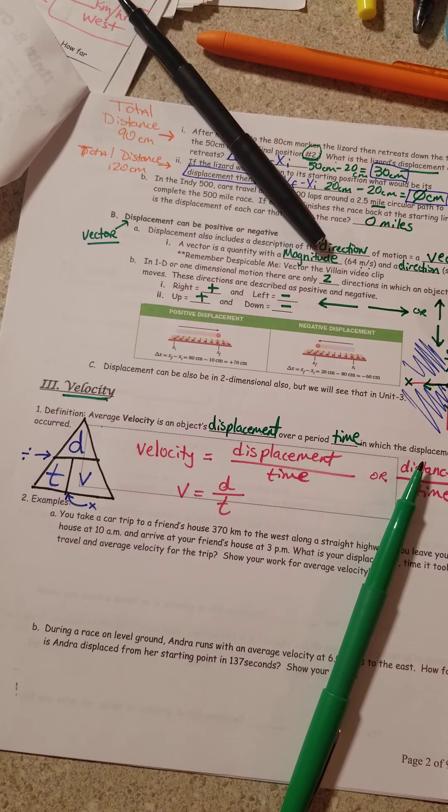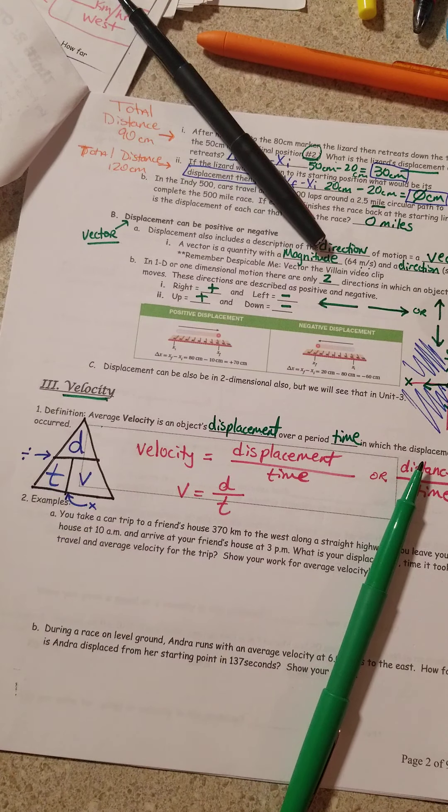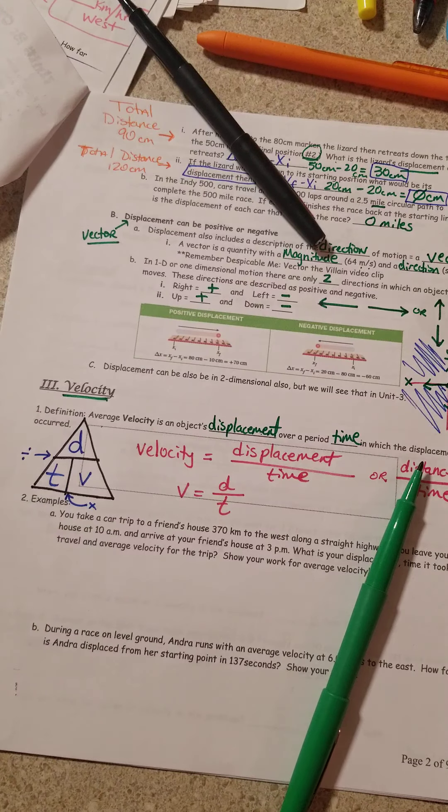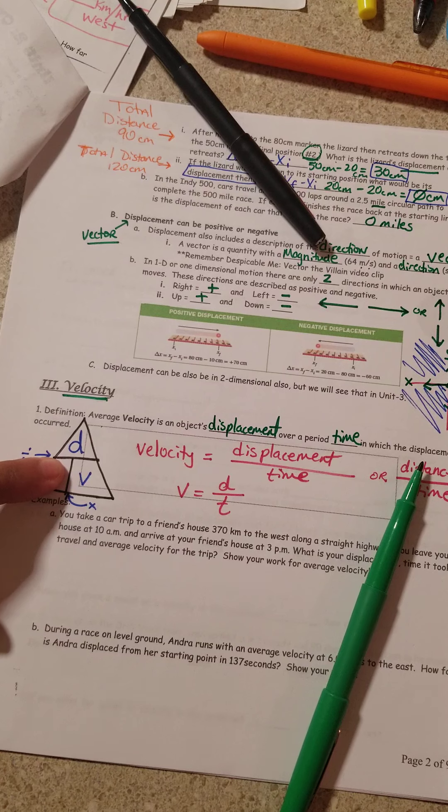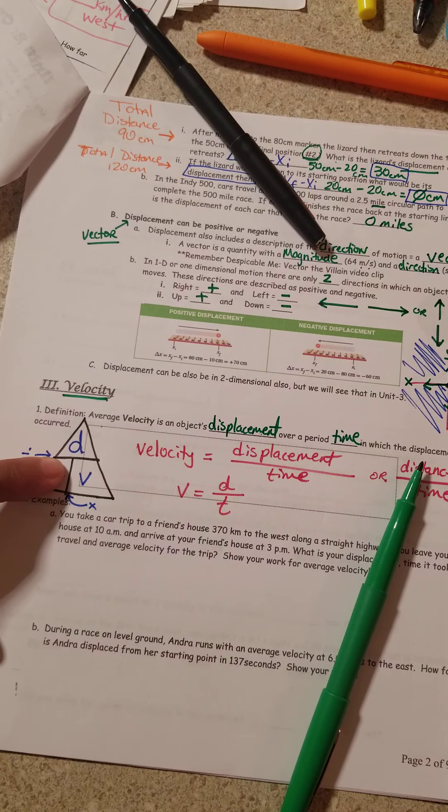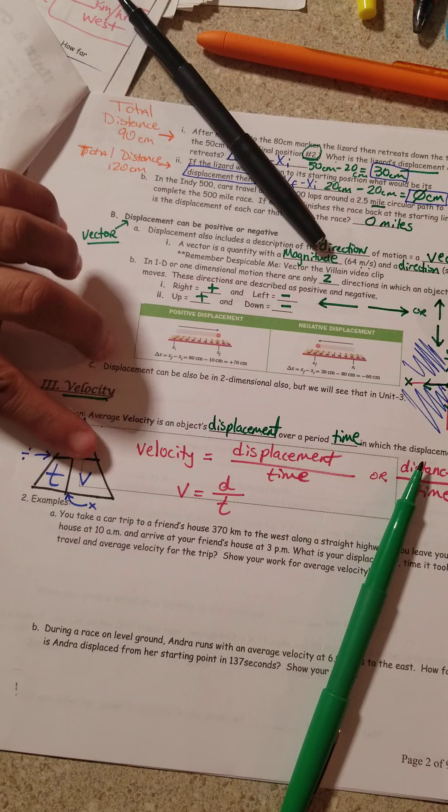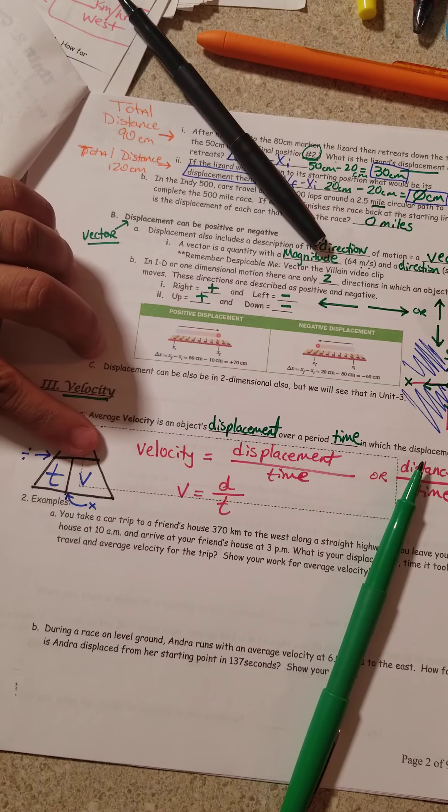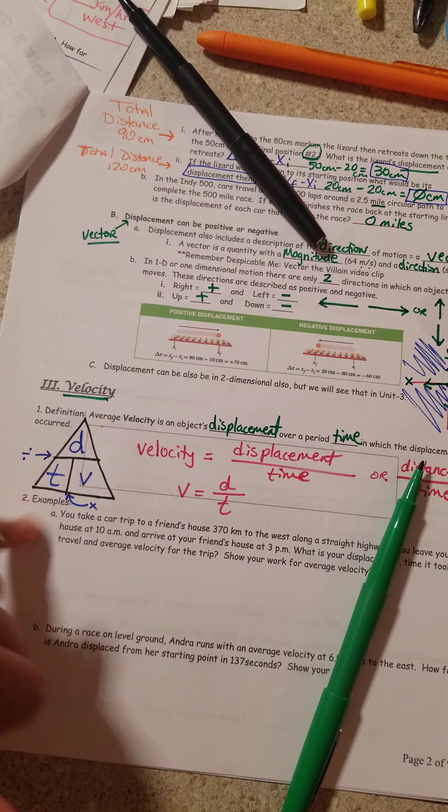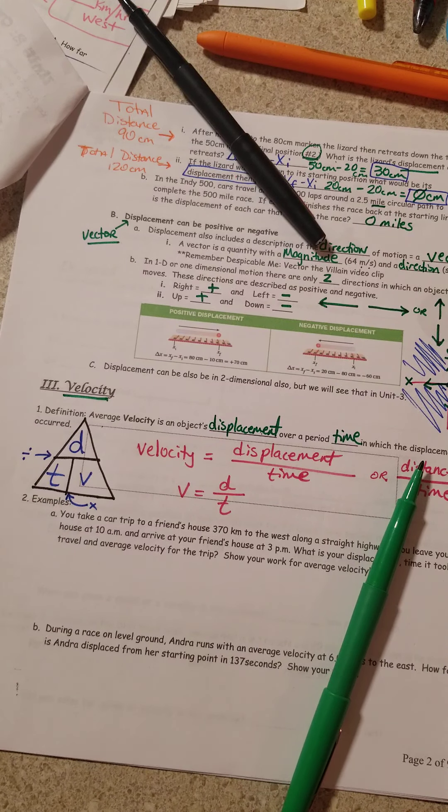Now, you can algebraically solve for one of your unknowns, or if you plug it into the triangle for an example, what if I'm looking for the time? Cover the T up. T equals D over V. What if I'm looking for distance or displacement? Cover it up. Distance or displacement equals times time velocity. If I'm looking for velocity, velocity is D over T. You can now quickly rearrange it from the triangle without having to algebraically solve it. But you are more than algebraically welcome to solve it.